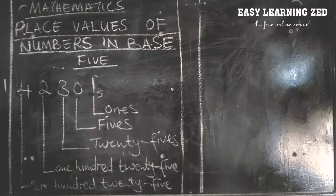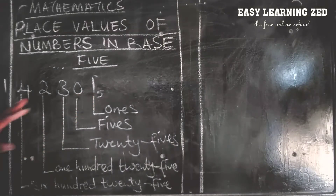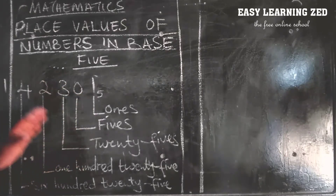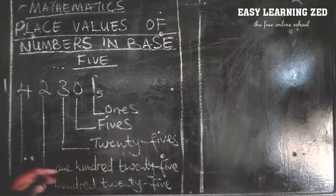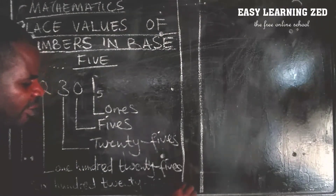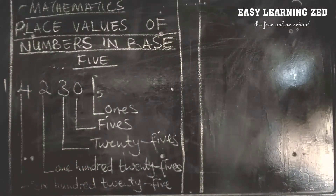The first number on the right side is ones, then five, then twenty-five, then one hundred twenty-five, then six hundred twenty-five.